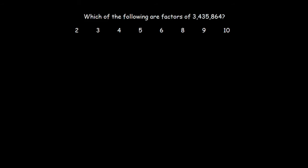Number 2. If you refer back to the divisibility rules, if a number is even, it's divisible by 2. Is the number 3,435,864 divisible by 2? Yes, it is. Why? Because it's even. It ends in 4. And we know that any number ending with even numbers are even. Yes, number 2 can be one of the answers.